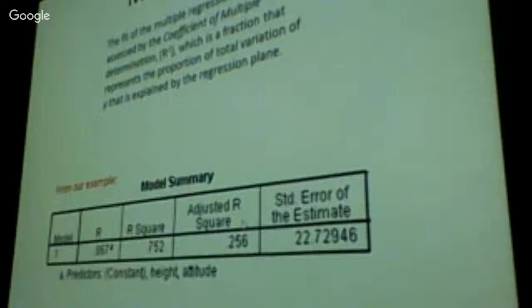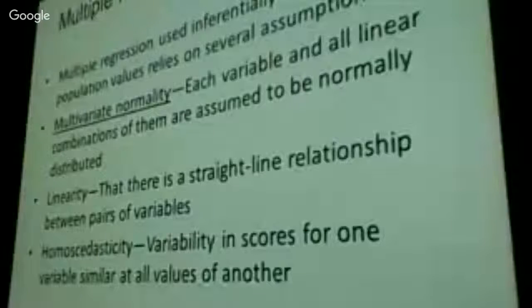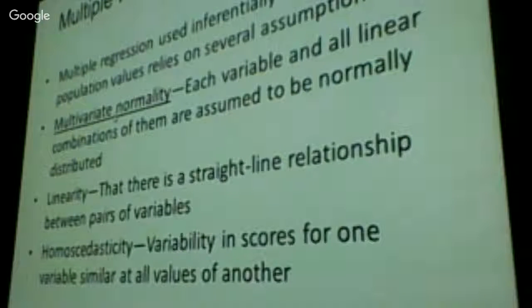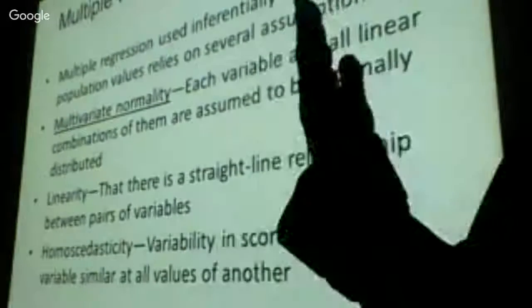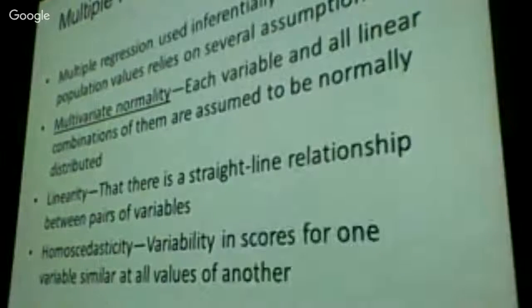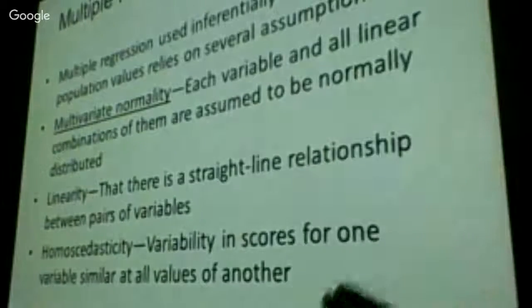So again, capital r squared is the fraction of variance in the dependent variable explained by a set of the other variables. Now, SPSS will give this kind of output. Here is our R. Here is the r squared. 0.75, very high. 75% of the variance in time in prison is explained by height and attitude score. Things, the assumptions that underline multiple regression. Like linear regression, there's an assumption of normality.